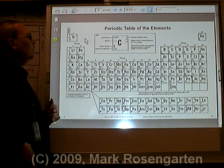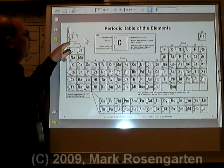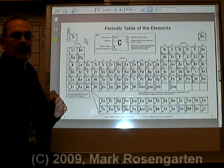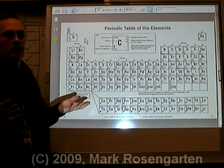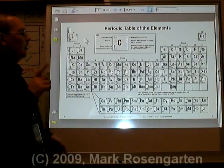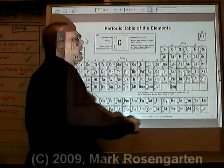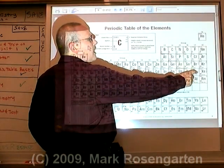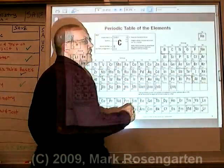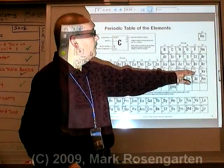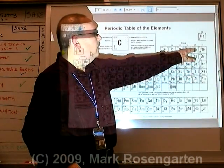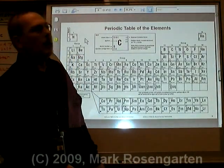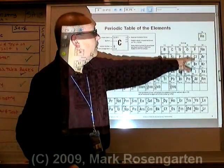Back in the old days, the elements were ordered in order of increasing atomic mass. However, that doesn't always work. For example, tellurium actually weighs more than iodine, but Mendeleev decided to place iodine below bromine, chlorine, and fluorine because iodine has very similar chemical properties to these elements.